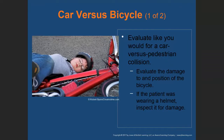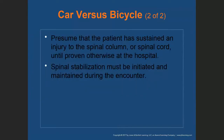Car versus bicycle: the car always wins. Evaluate as you would for a car versus pedestrian collision. Evaluate the damage to and position of the bicycle. If the patient was wearing a helmet, inspect it for damage. Presume that the patient has sustained an injury to the spinal column or spinal cord until proven otherwise at the hospital.